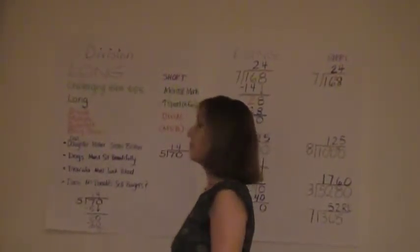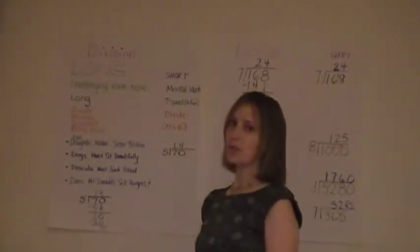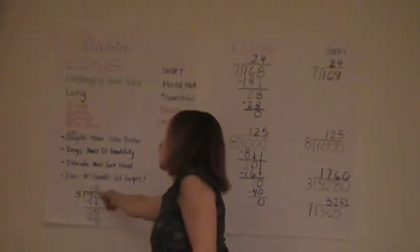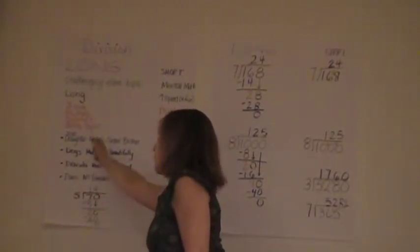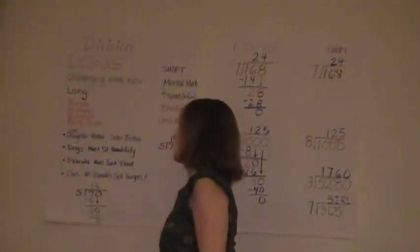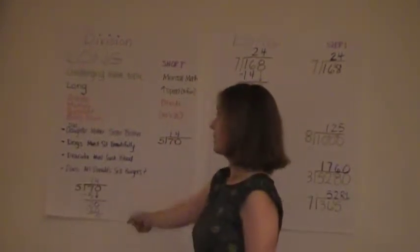So the first problem in using long division is 5 into 70. And so the first step is to divide. So you take 5 and you say how many times does 5 go into 7 and you write the 1 over here and then you multiply 1 times 5 and you put the 5 here. And then you subtract 7 minus 5 and you get 2 and then you bring down that 0.